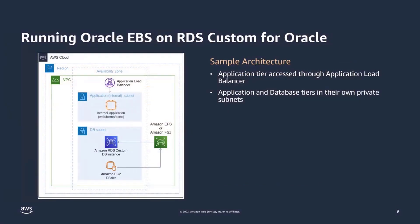To give you an idea of what the architecture looks like — it's a pretty simple architecture. We've got our application load balancer in its own isolated subnet. We've got the application and database tiers separated as well. At the bottom, you've got Amazon EFS, a shared file system, to store those temporary files.